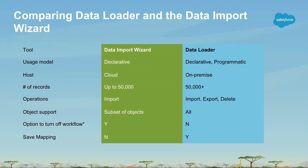There's a feature the data import wizard has: the option to turn off workflows and triggers. The data loader does not have that. At the time the data import wizard was built it seemed like a good idea, but best practices have evolved. Actually, one of the best practices now is that you do not turn those off — those rules are in place to maintain the integrity of the data in your org. You want clean data that makes sense, not just an import job that's done and over with.